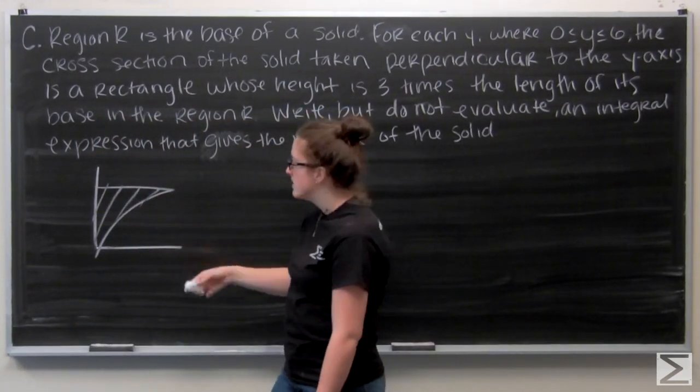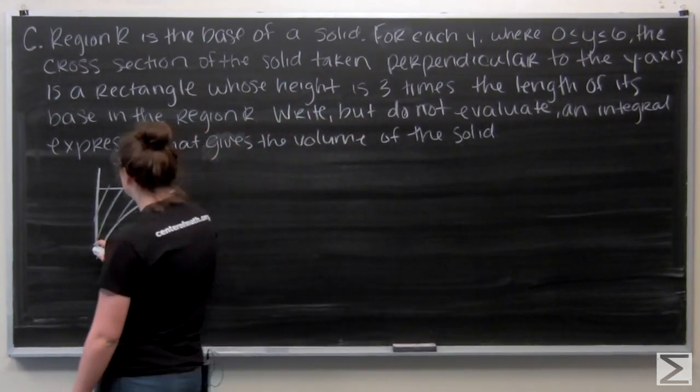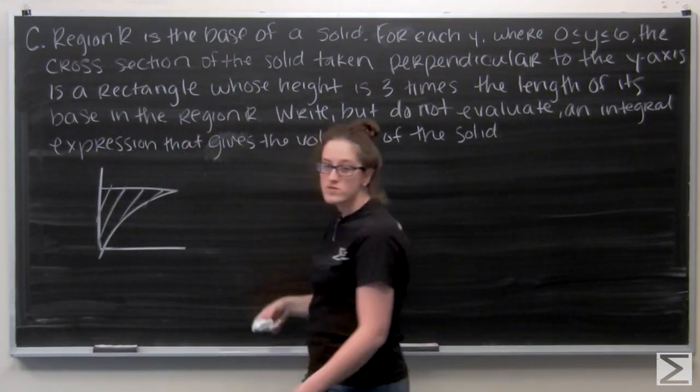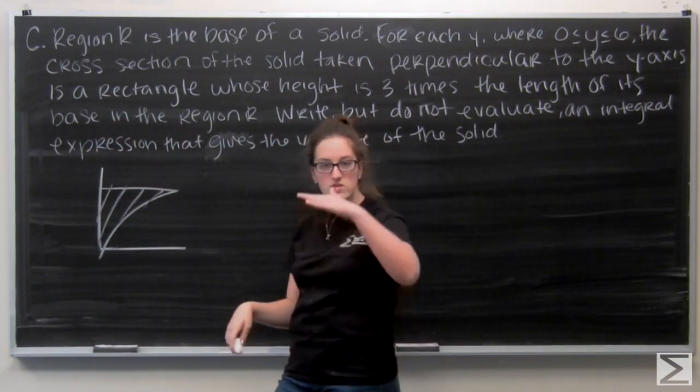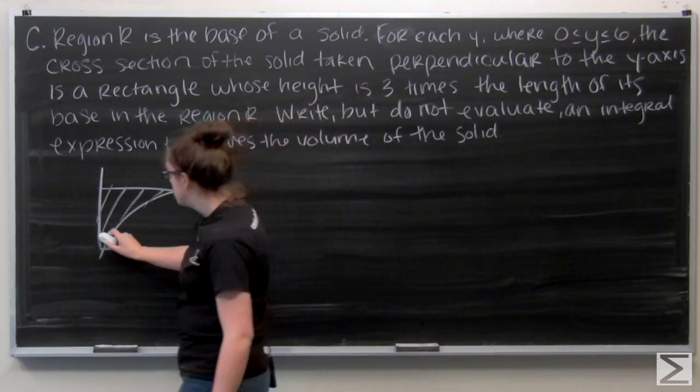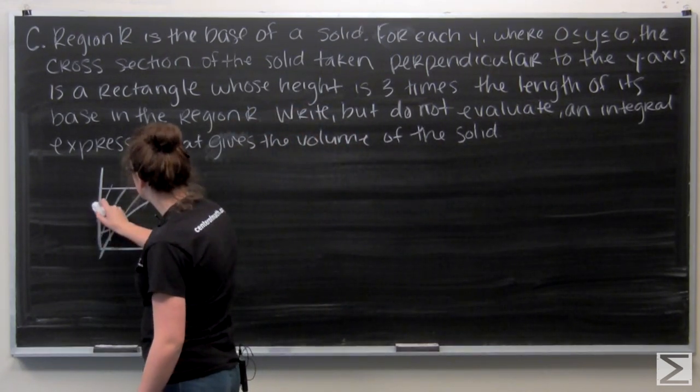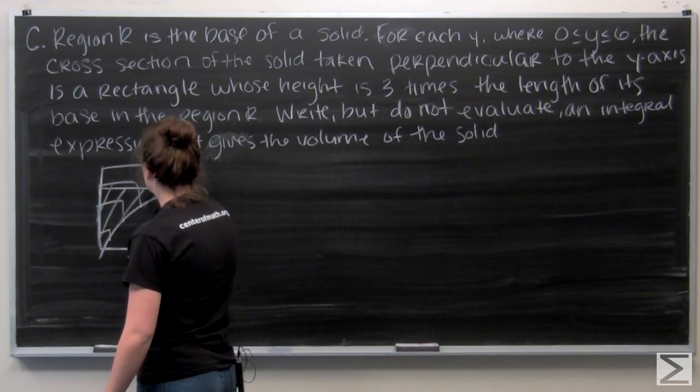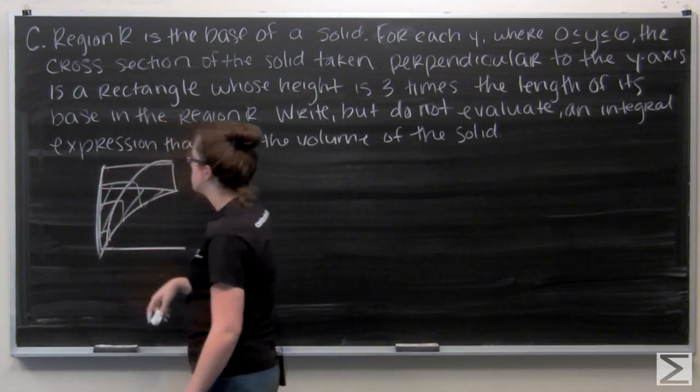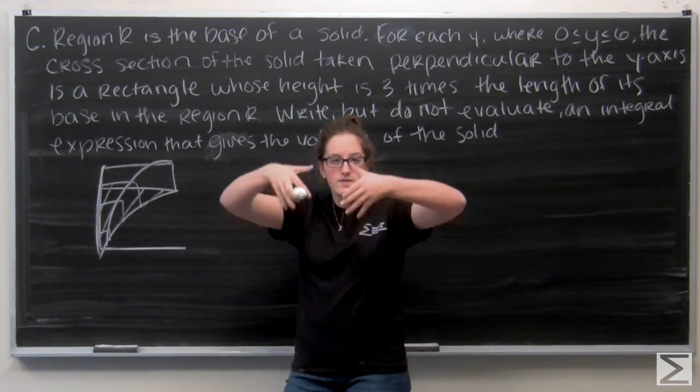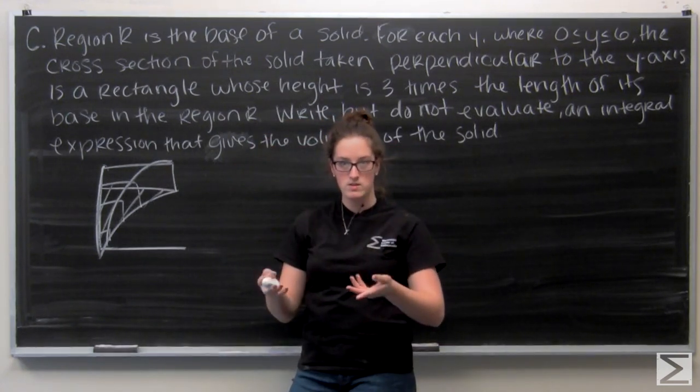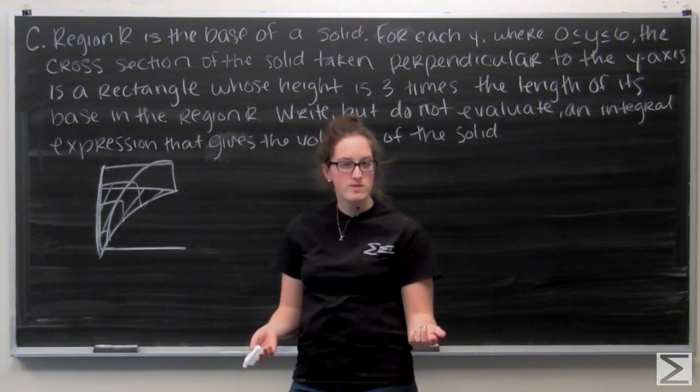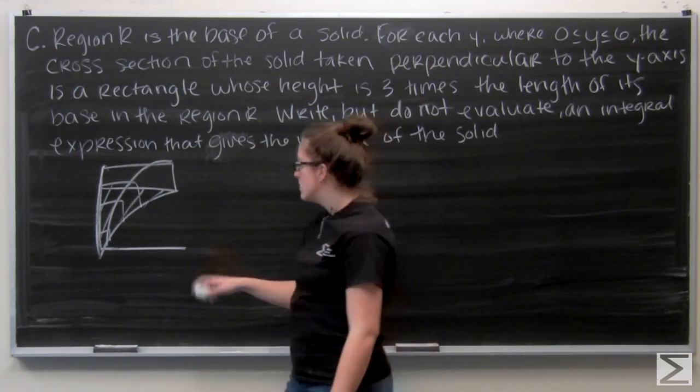This is my region, right? And then I have these rectangles. And it's important to note that these rectangles are perpendicular to the Y axis. So they're going to cut like this. So there's one little rectangle. It looks a little funny, but it kind of rises up as it goes back. Now, first let's think about what the area of one of these rectangles would be.